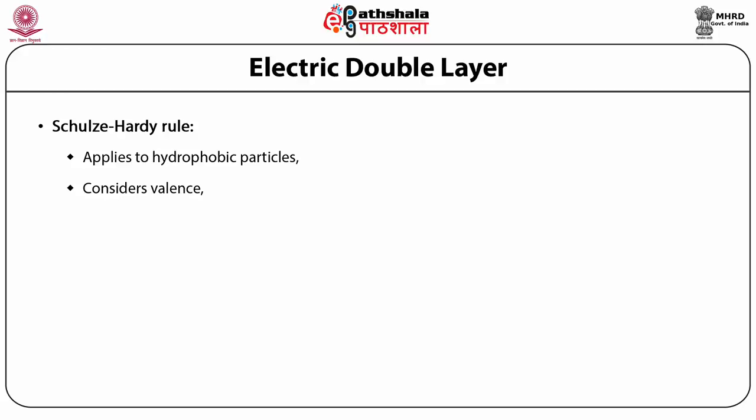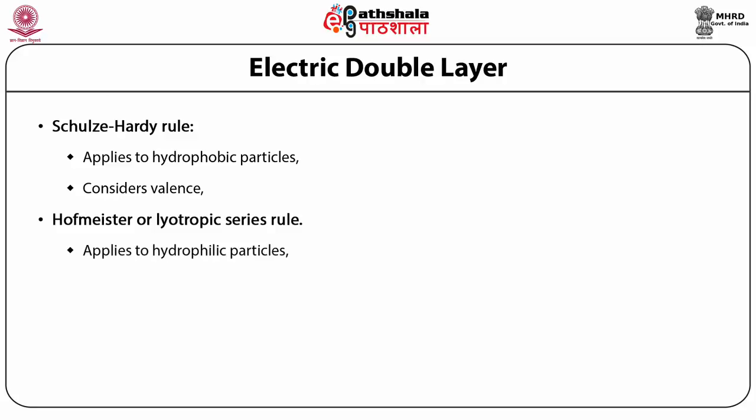The influence of valence and concentration on the aggregation of a lyophobic particle suspension can be determined experimentally either by measuring the change in zeta potential, or by observing the degree of aggregation in terms of some measurable parameters such as sediment height. The Hofmeister or Lyotropic series rule applies to hydrophilic particles in a manner somewhat analogous to the Schulze-Hardy rule, and takes into account not only the charge but also the ionic size and hydration capability.